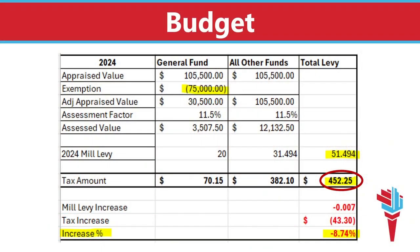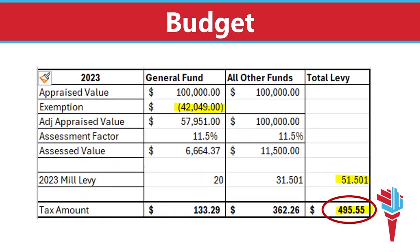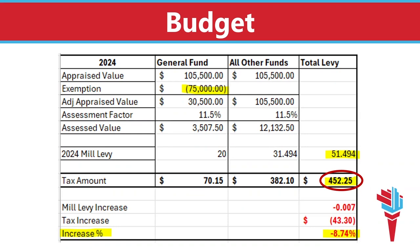In this updated example, three things have changed. The appraised value of the home has increased 5.5%, matching the example in the news article, so we start with $105,500. The second change is that legislators increased the exemption to $75,000 for this year. The third change is that the total mill rate decreased by .007. Looking at the last column, you can see the 51.494 mills and a total amount of $452. Compared to $495 last year, the property taxes decreased by $43, which is an 8.74% decrease for the homeowner in this example.